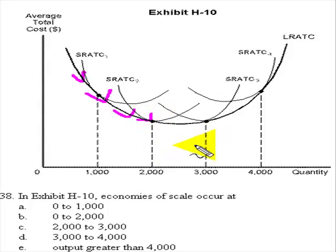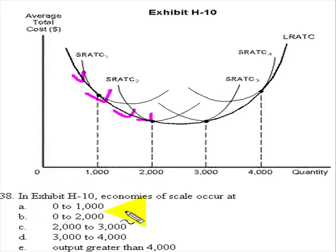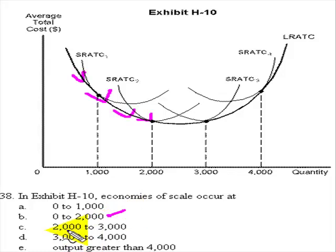If we go beyond this point, we start to see that average total costs are rising. So 0 to 1,000 is certainly true, but it's not good enough because even from 0 to 2,000, economies of scale are kicking in. So we'll put a check mark by that — that looks reasonable.